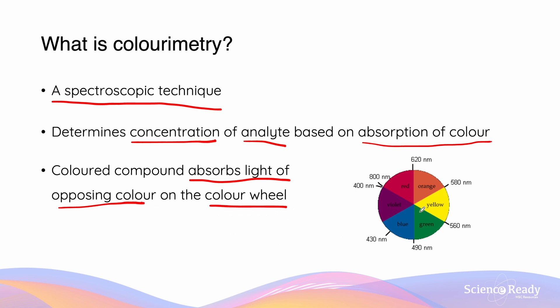For example, if we have an orange colored substance, we should expect, looking at our color wheel, that it mainly absorbs blue light, and thus reflects the other wavelengths of light.